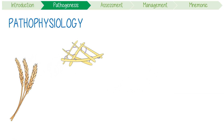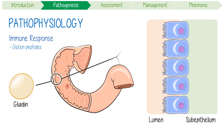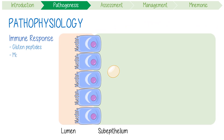Its pathophysiology revolves around an immune response to gluten peptides. When you eat gluten, it gets broken down into smaller proteins like gliadin. Once in the lumen of the bowel, gliadin passes through the bowel wall. These peptides then get modified by tissue transglutaminase, making deaminated gliadin.